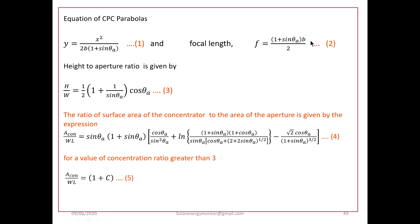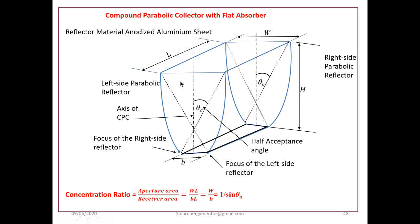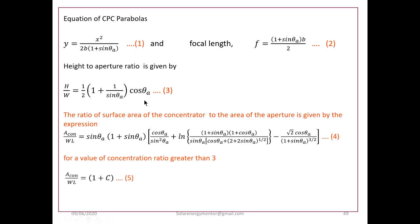The focal length f is equal to (1 + sin θ_a) × b / 2. The height-to-aperture ratio is given by the expression: one-half times (1 + 1/sin θ_i) × cos θ_i. The ratio of surface area of the concentrator to the area of the aperture — A_con divided by (W × L) — is given by: sin θ_a × (1 + sin θ_a) × [cos θ_a / sin² θ_i + ln(bracket) − √2 × cos θ_a × (1 + sin θ_a)^(3/2)].